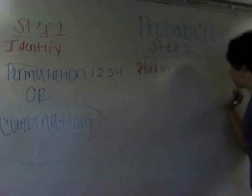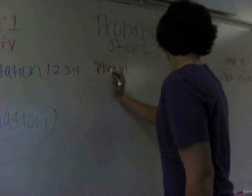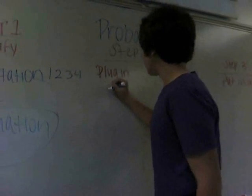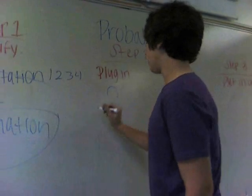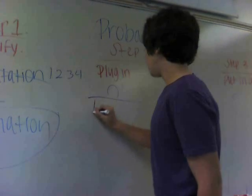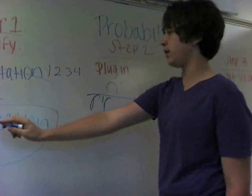So next what we want to do is plug it into the formula and our formula for combination is n factorial with n being the total number that we can pick from, divided by r factorial times n minus r factorial, where r is going to be how many he can pick.